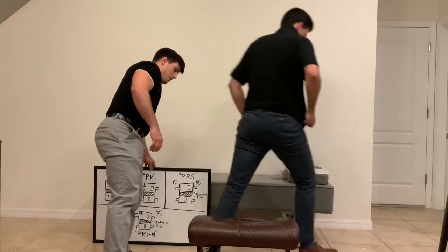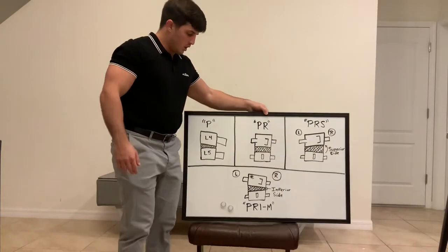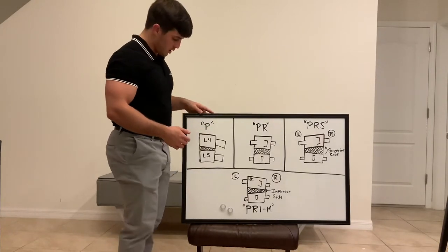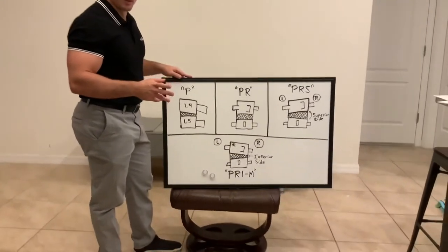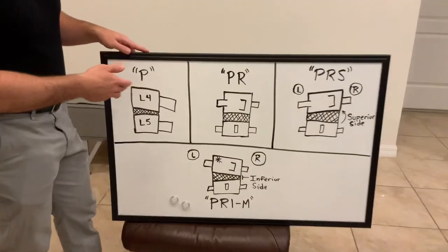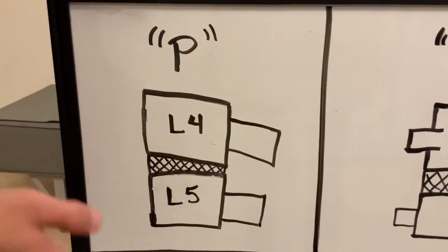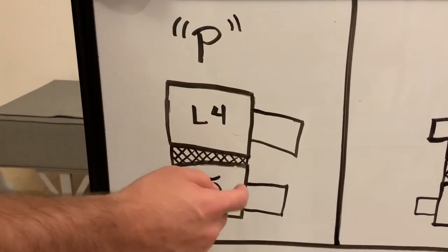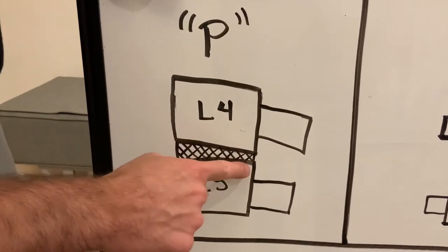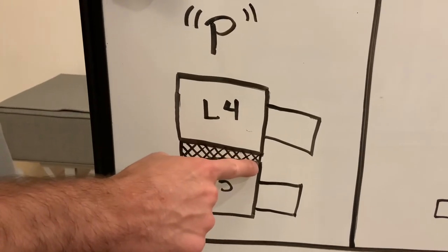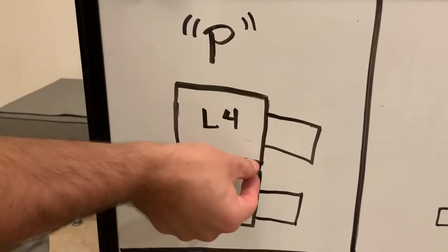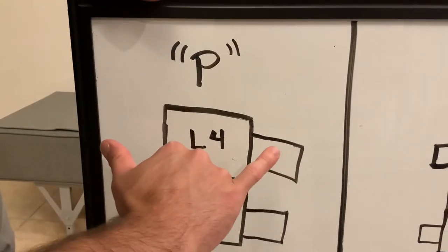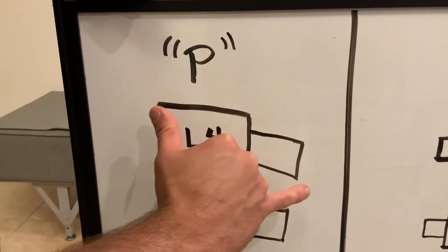So we drew a little schematic, and in the sheet that we have online on Instagram, everything is drawn out — every different type of listing. When we're looking for posteriority, we're going to look at the lateral film. As we can see here, the disc space in the posterior aspect of the vertebra is thinner, and we have a wedge in the anterior aspect. So now we're thinking that the vertebra has dropped posterior and a little bit inferior.